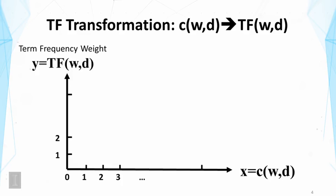First, let's talk about the TF transformation. That is to convert the raw count of a word in the document into some weight that reflects our belief about how important is this word in the document. And so that would be denoted by TF(w,d) as shown in the y-axis. Now, in general, there are many ways to map that.